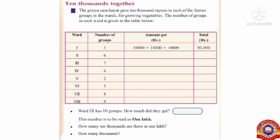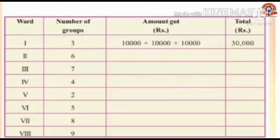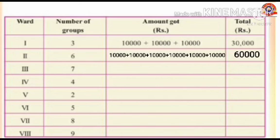The next activity is '10,000 Together.' The Gramam Panchayat gave ₹10,000 to each of the farmer groups in the wards for growing vegetables. The number of groups in each ward is given in the table below. Ward number 1 has 3 groups, each group got ₹10,000. So 10,000 added 3 times makes 30,000. For ward 2, which has 6 groups: 6 × 10,000 = 60,000.